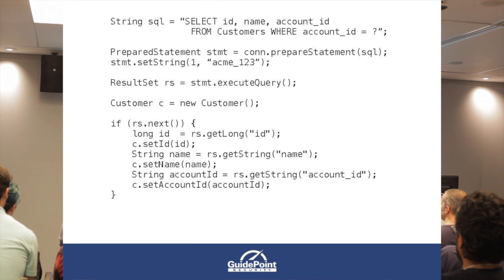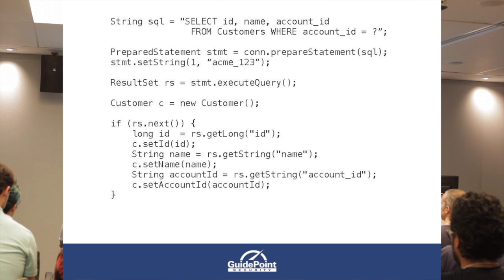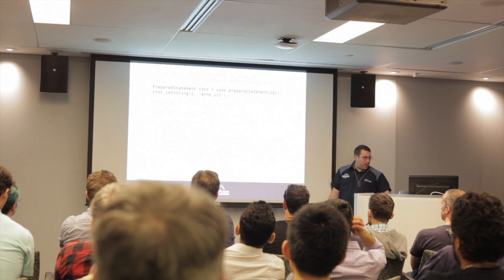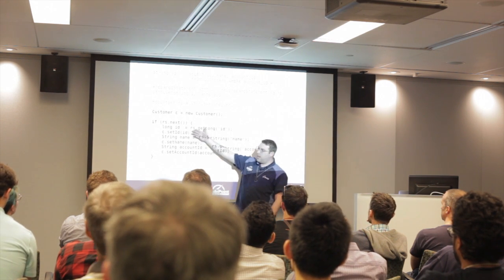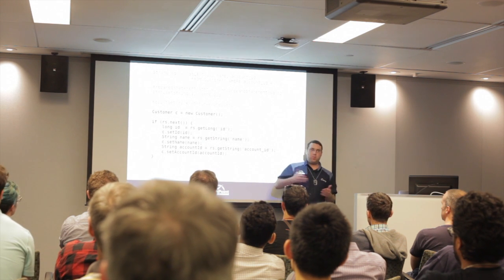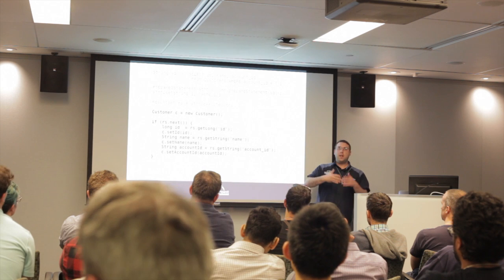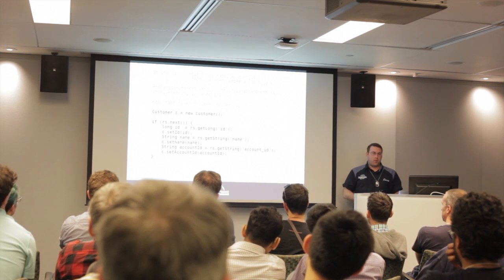Here's the old-school way of doing database access — you still see this in a lot of legacy applications. We have our SQL statement, make a connection, execute the query, create a new customer object, check for a result, and map the database columns to the object fields. It's a simple pattern that inspired the design of Hibernate.